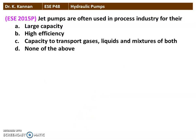Next question from the 2015 question paper: Jet pumps are often used in the process industry for their large capacity, high efficiency, capacity to transport gas, liquid, and a mixture of both, or none of the above. Option C is the correct answer. Jet pumps can handle gas, liquid, or a mixture of gas and liquid — that is the advantage of the jet pump.